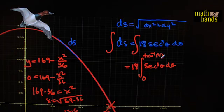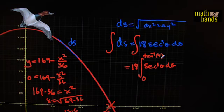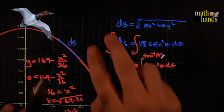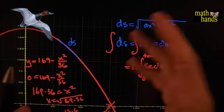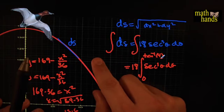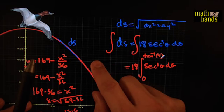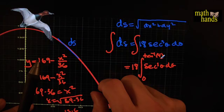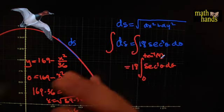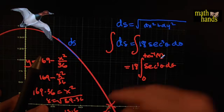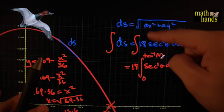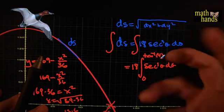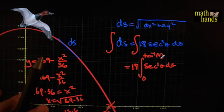You'll have to wait for second-semester calculus to finish the bird problem, since it requires integration by parts. Take a little break, then check out one more example using polar coordinates — everything is the same except the algebra is a little different when you have r's and thetas. See you next time.